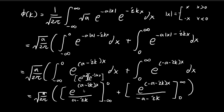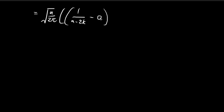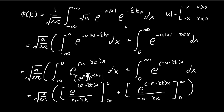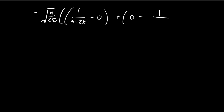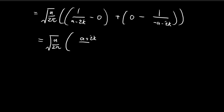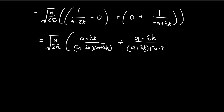Combining the results: from the first integral we have 1/(a − ik), and from the second integral we subtract 1/(−a − ik). To simplify, we multiply the first term's numerator and denominator by (a + ik), and the second term's by (a − ik). This is because (a + ik)(a − ik) = a² + k², so both denominators become a² + k².